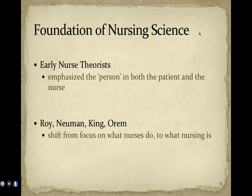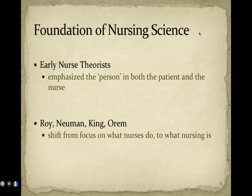The early nursing theorists really advanced more of a philosophy of nursing, and they emphasized the person in both the patient and the nurse. This very humanistic approach to nursing really paralleled a lot of the humanistic psychology that was emerging in the post-Freudian era. Subsequently, the grand theorists became prevalent — theorists like Roy, Newman, King, and Orem. We're going to be studying all these groundbreaking nurse theorists in future weeks. The focus shift with these theorists was from what nurses do to what nursing is.